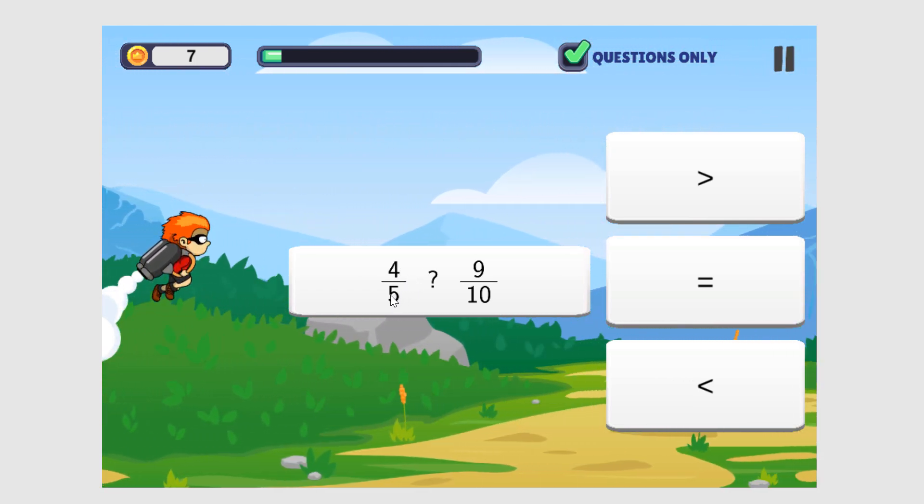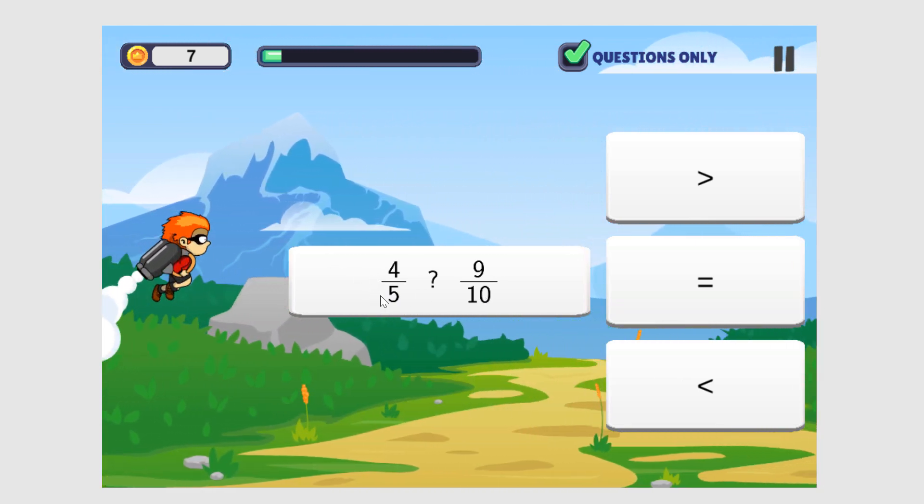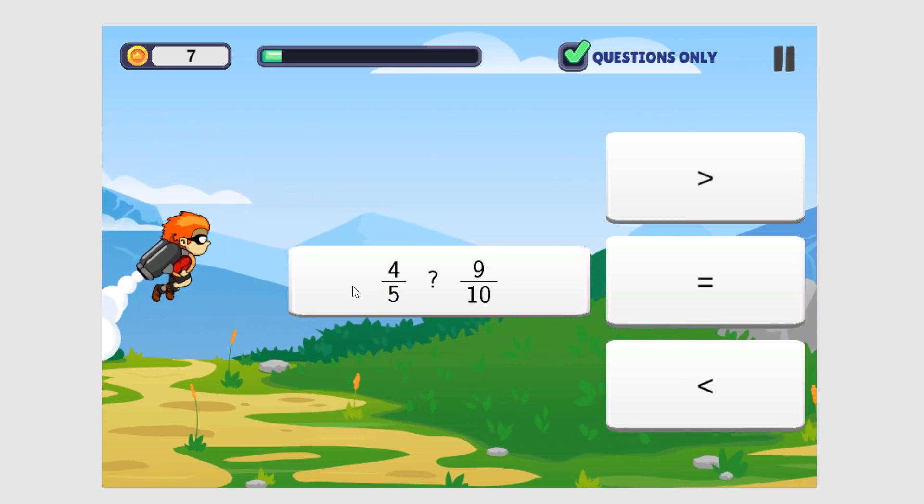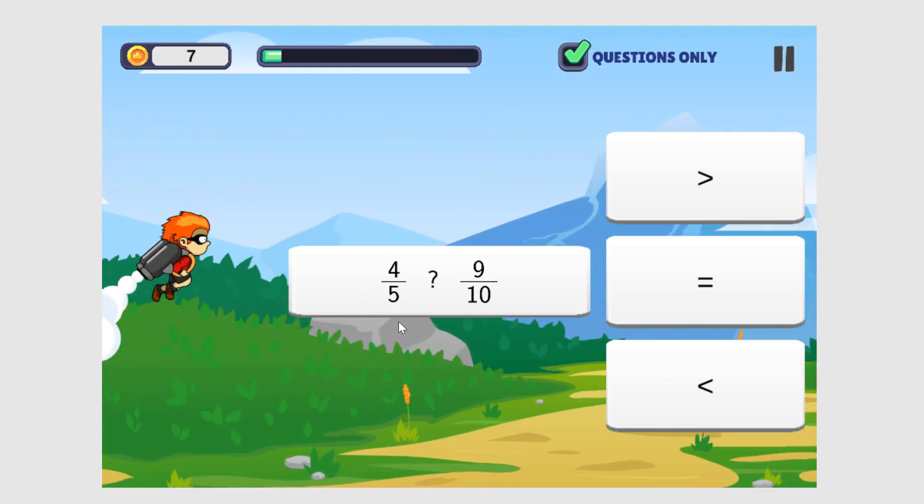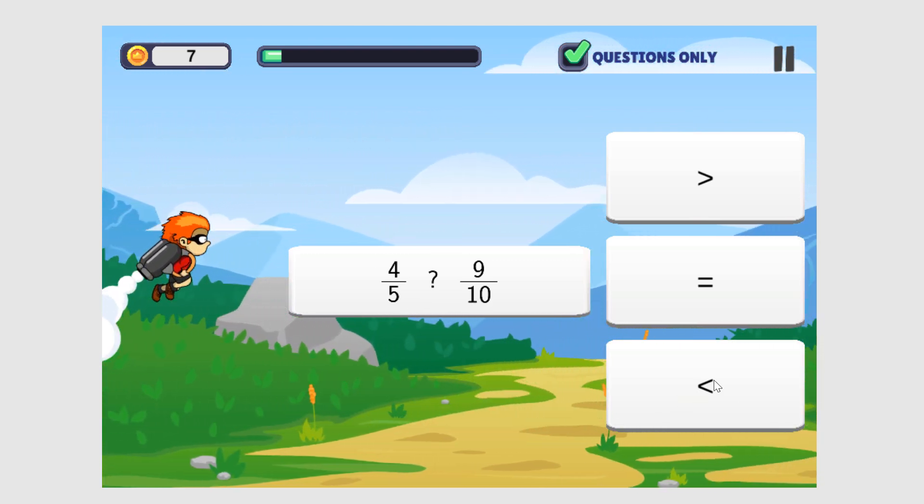And then we compare tenths to tenths. So 4 times 2 is 8, and 5 times 2 is 10. We're comparing 8 tenths and 9 tenths. 8 tenths is smaller, so the answer is less than.